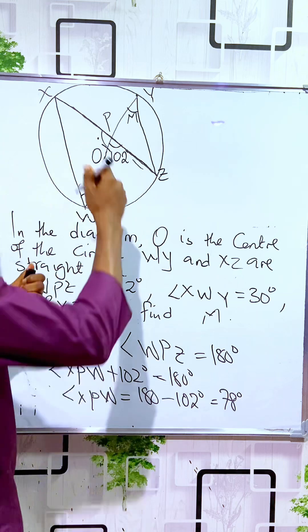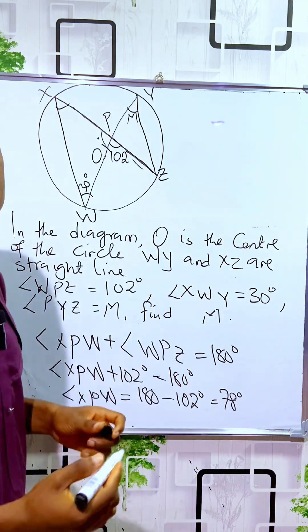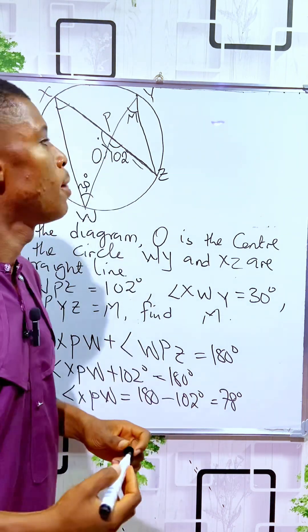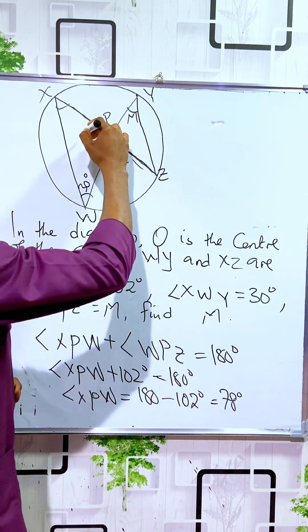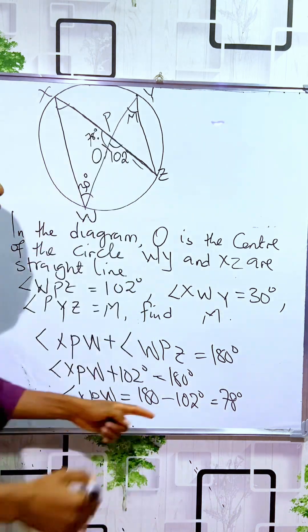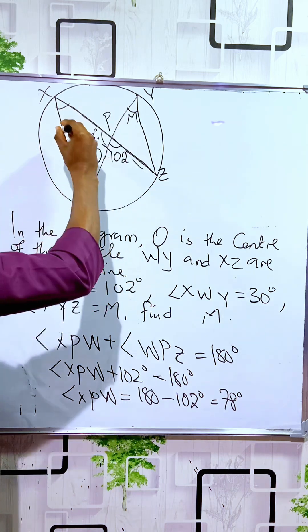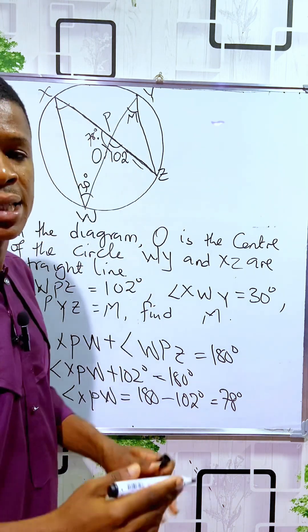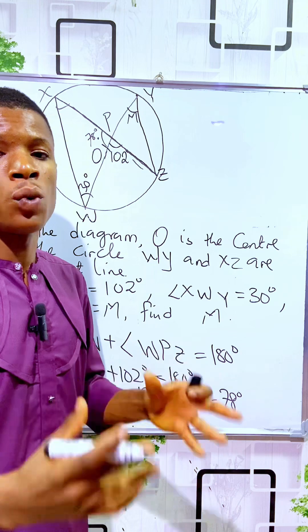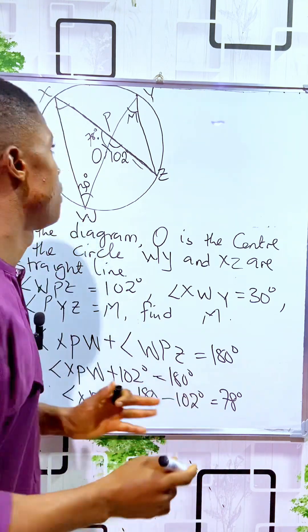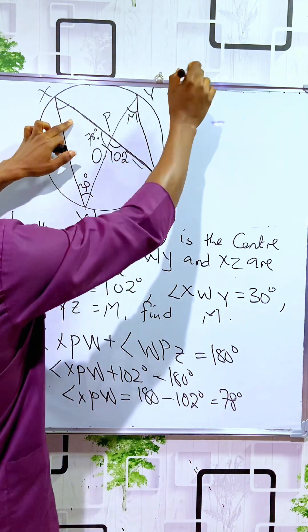Now we need to find this angle. We know angles in the same segments are equal. This forms a triangle, and the sum of angles in a triangle is 180 degrees.